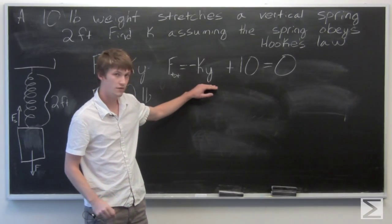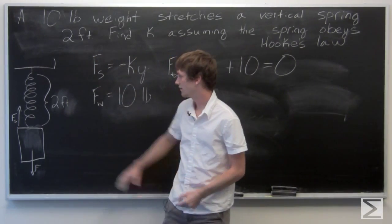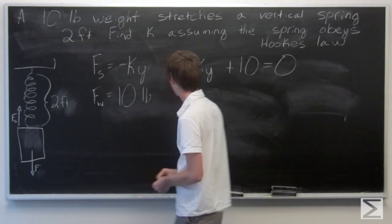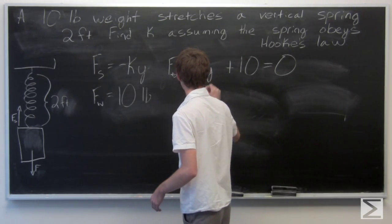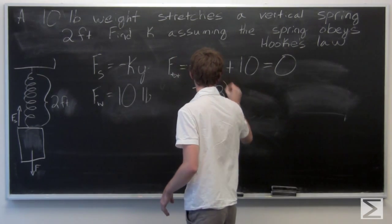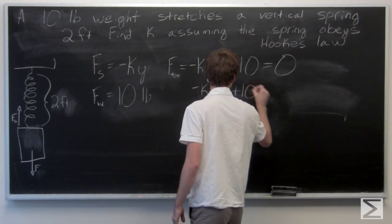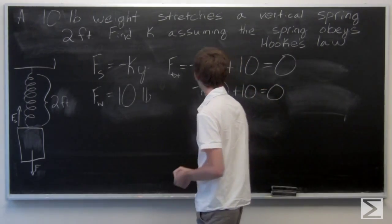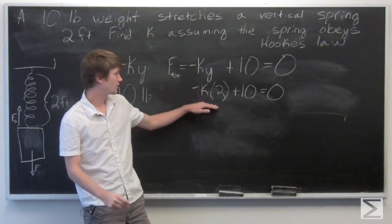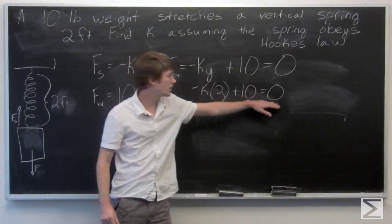Now we can plug in for our y value. We have that y is two feet. So we have negative K times two plus ten equals zero.